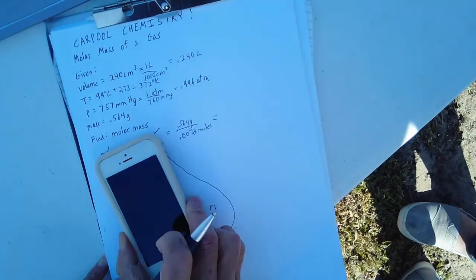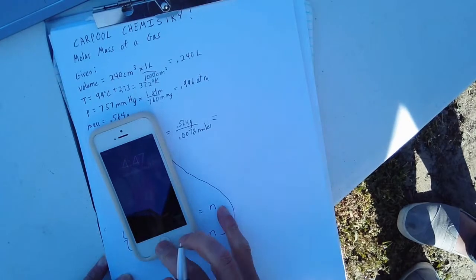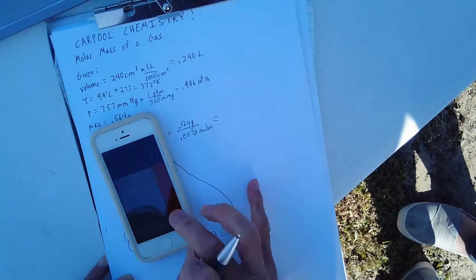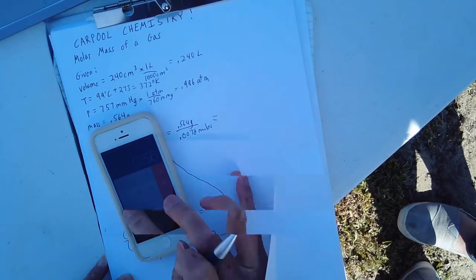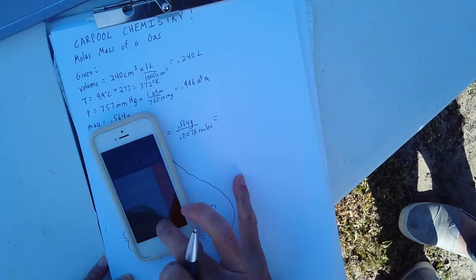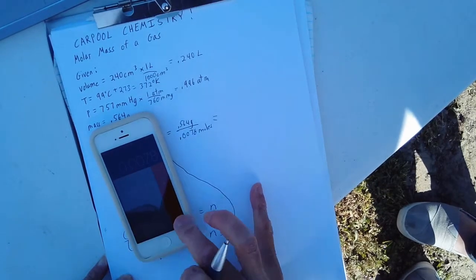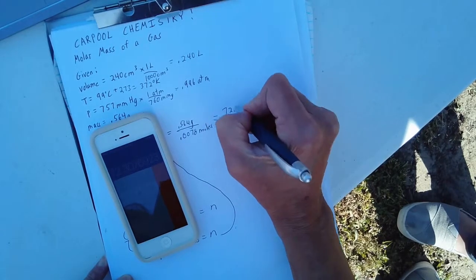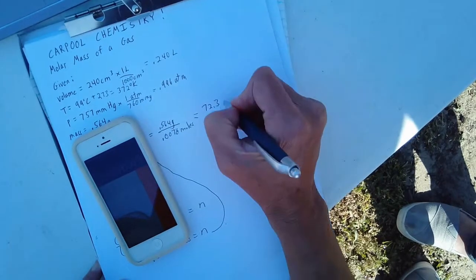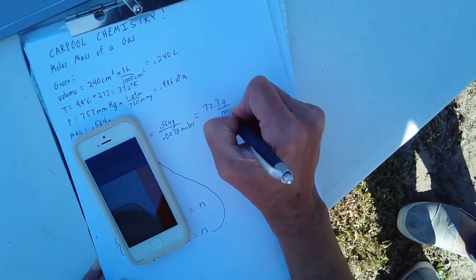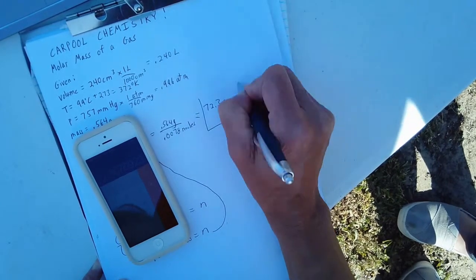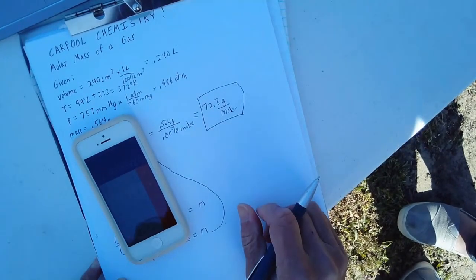And then to do this final calculation, we're looking at 0.564 divided by 0.0078 equals 72.3 with our units being grams per mole. And that's how you calculate molar mass of a gas.